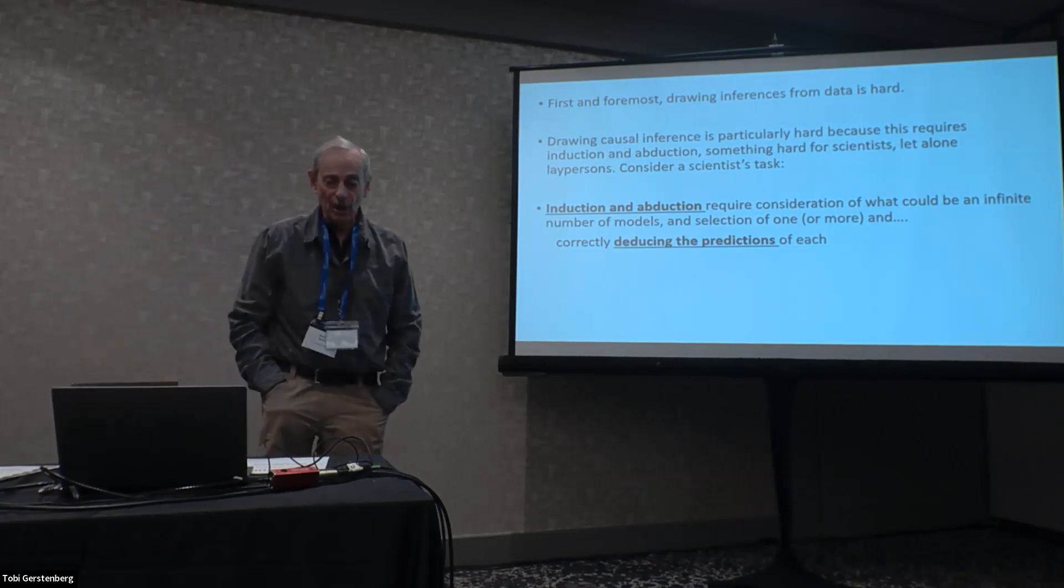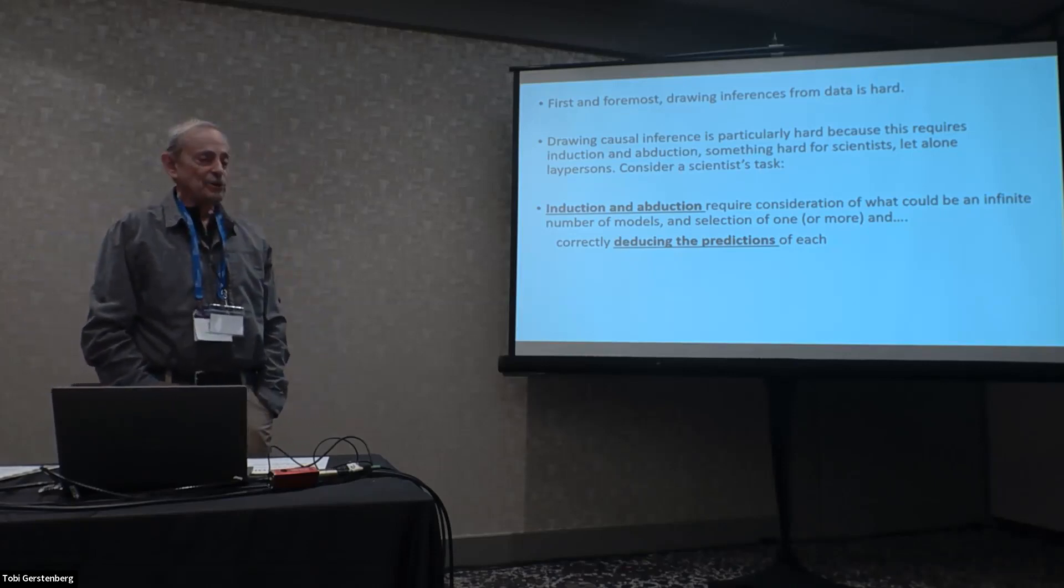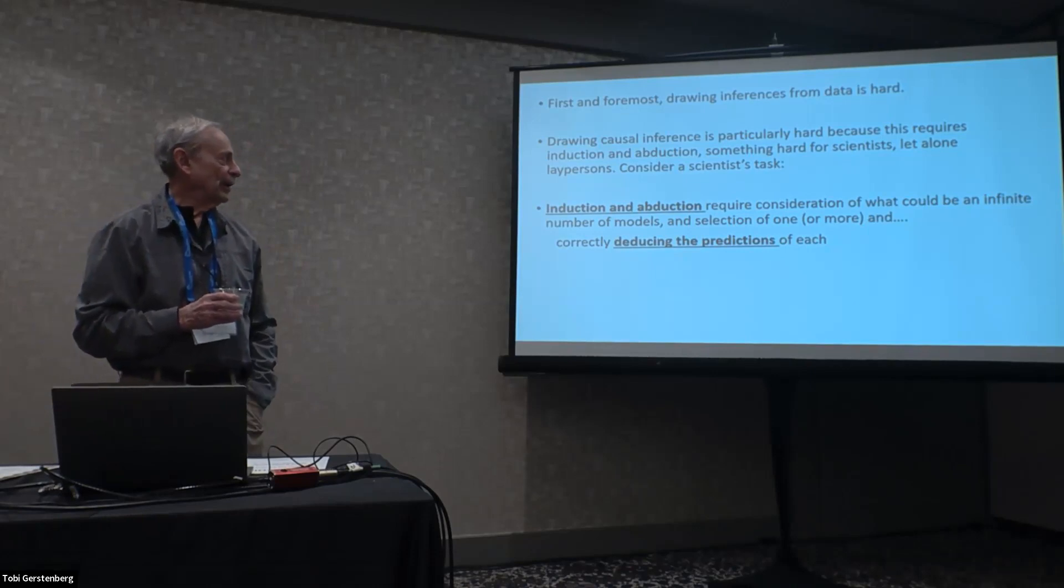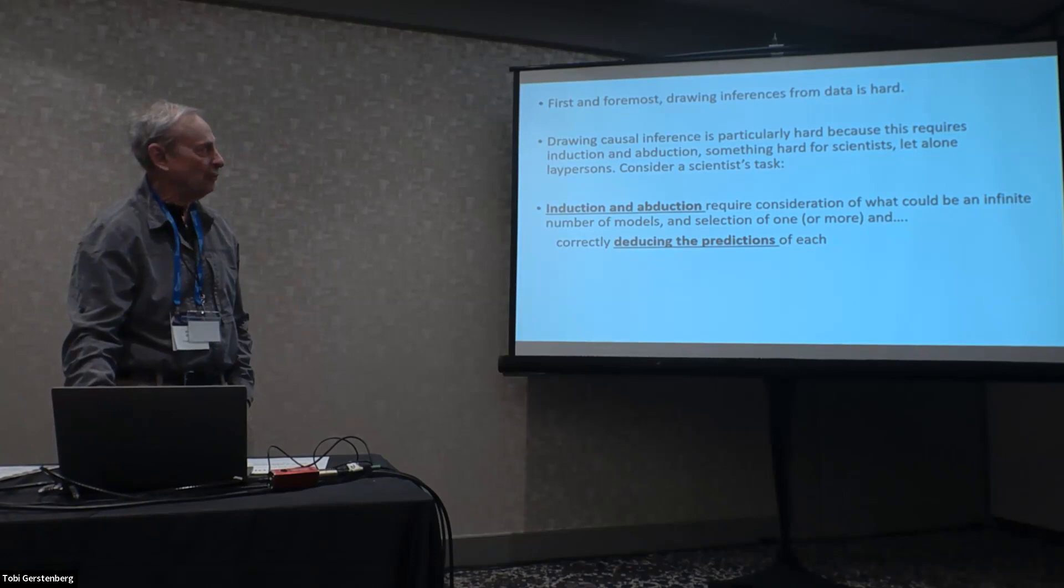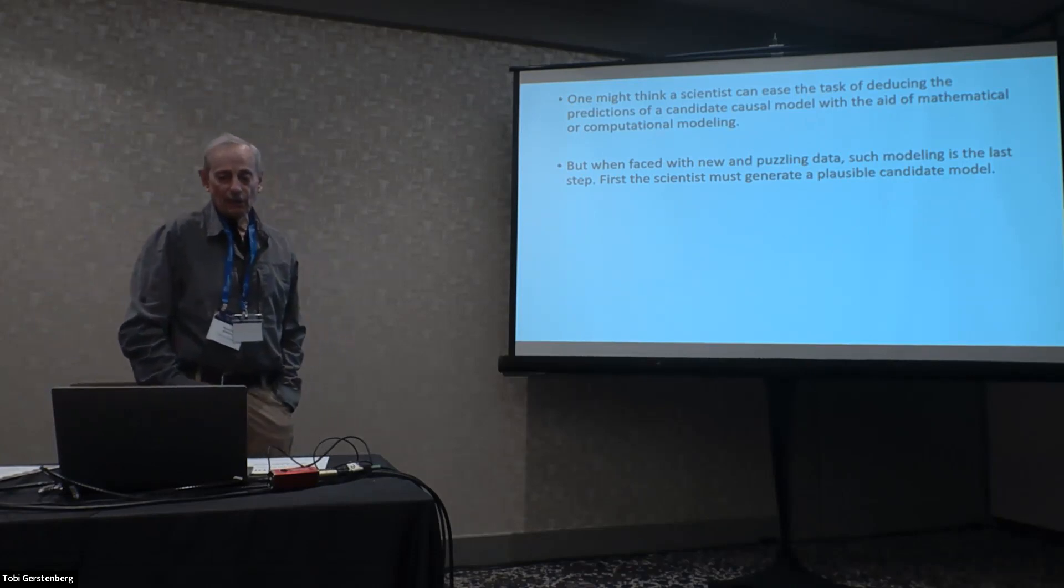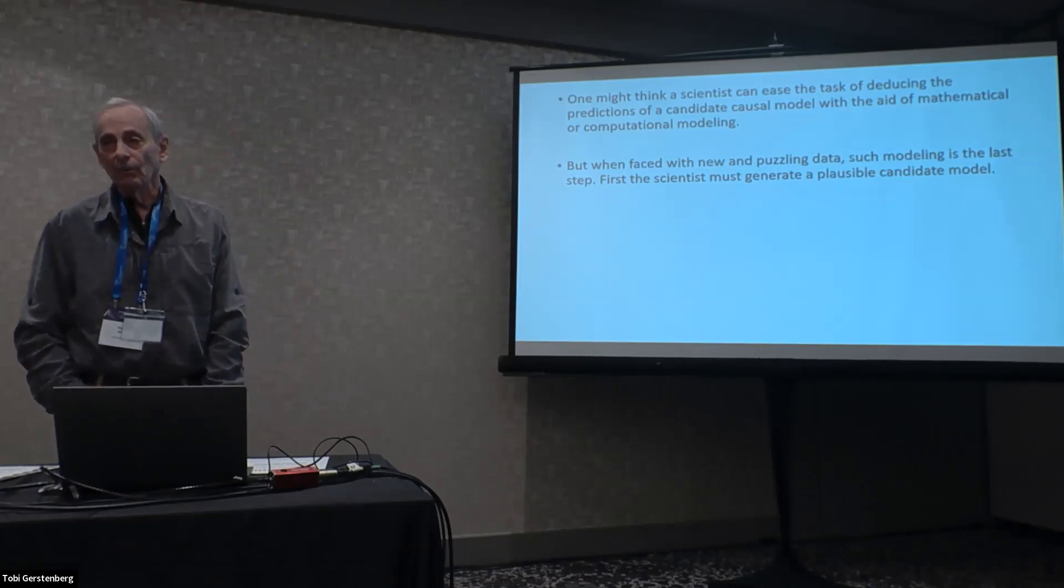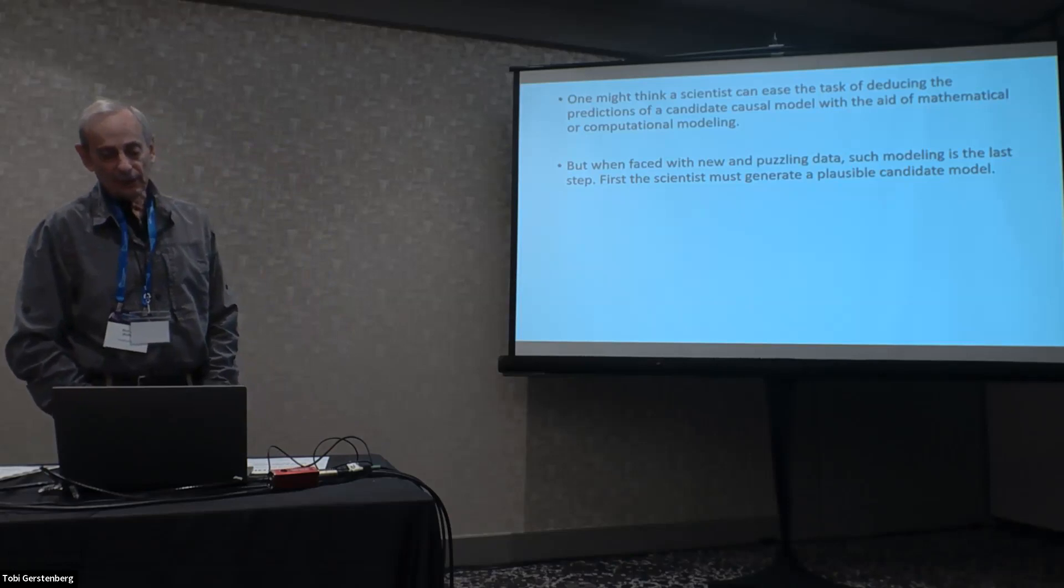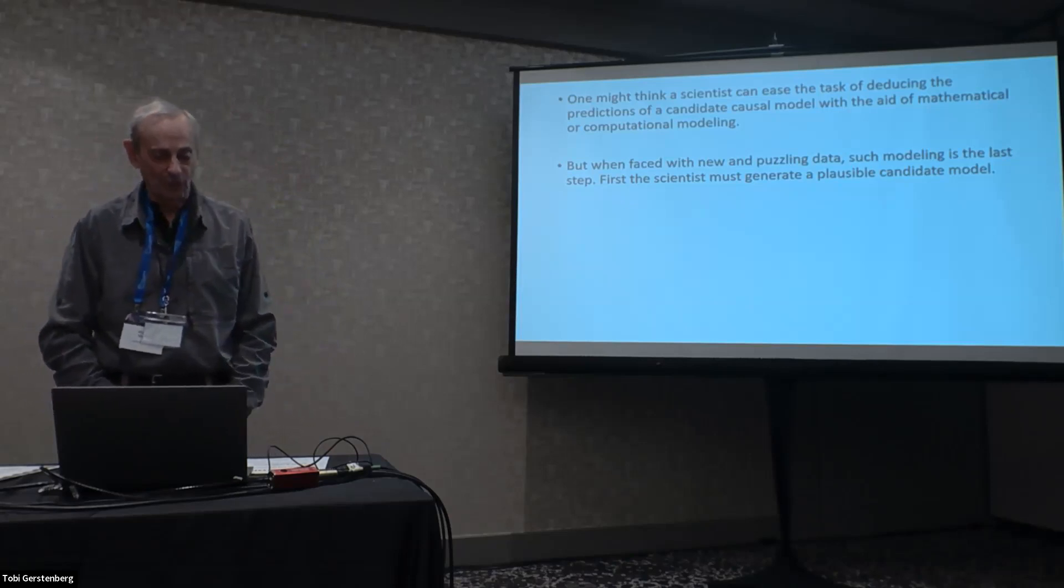The reason that we do it is it's hard. Drawing causal inference requires induction and abduction, consideration of what could be an infinite number of models and selection of one or more, and then correctly deducing the predictions of each one. So this is difficult for scientists, so it's not surprising that it's difficult for laypeople. When faced with new and puzzling data, how do we begin? Modeling computationally is the last step. First, we have to imagine what models to put in our computational model. We have to generate a plausible candidate model.